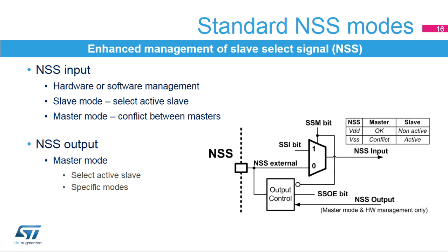The NSS input can be managed by hardware or software depending on the SSM bit in either master or slave modes. As a slave input, it is used to identify itself as the active slave for communication. As a master input, it signals a potential conflict between masters in a multi-master system. The NSS working as an output is only used in master mode and is managed by hardware in a standard or specific control mode. Additional slave select outputs can be provided by the GPIOs under software control.